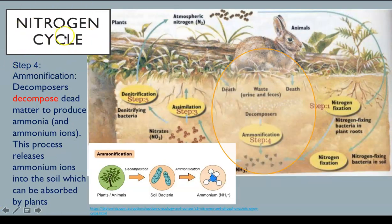Step four in the nitrogen cycle is ammonification. As a plant or animal decays, decomposers such as insects, worms, bacteria, or fungi will decompose organic materials to produce ammonia and ammonium ions. This process is known as ammonification and releases ammonium ions into the soil, which can be absorbed by the plants.